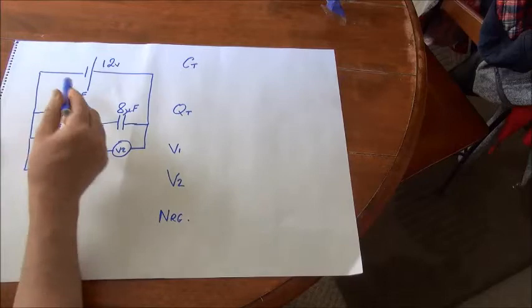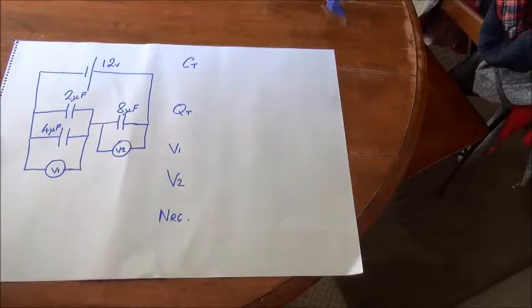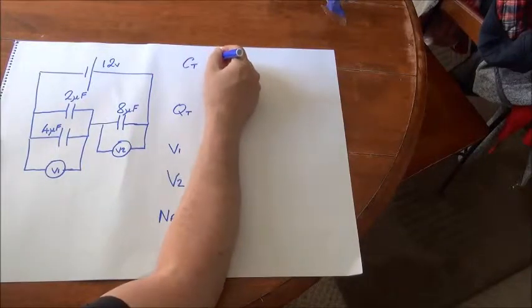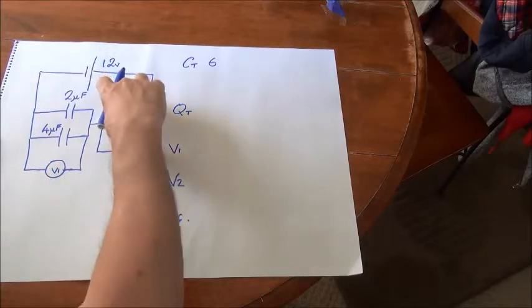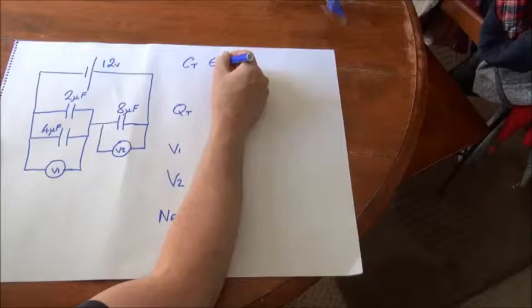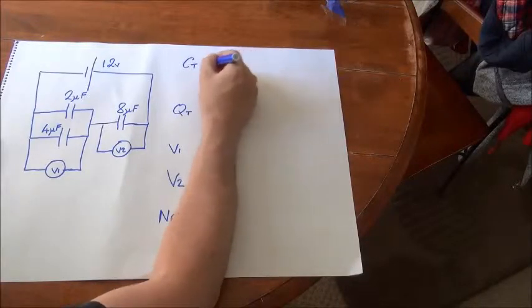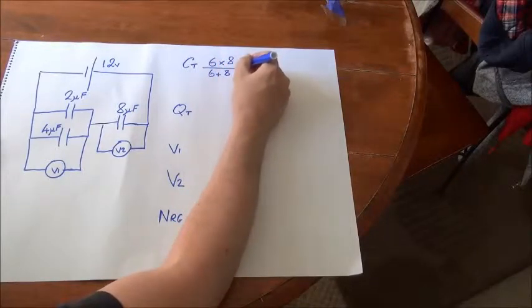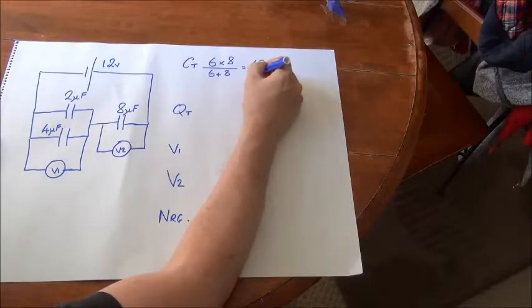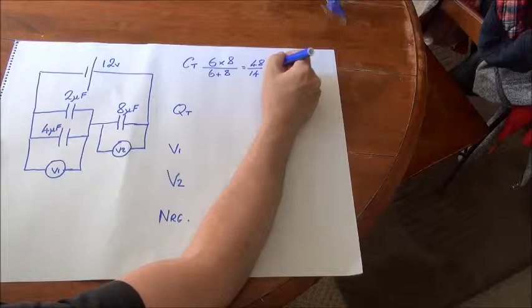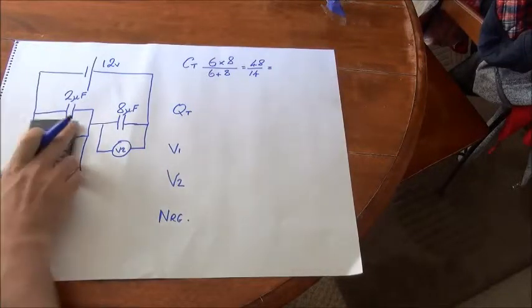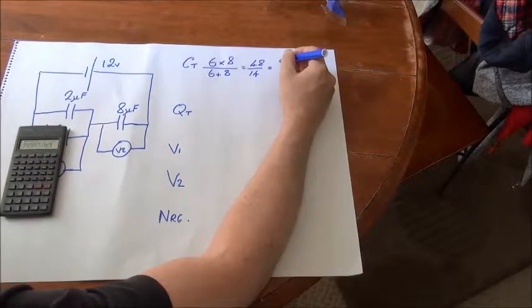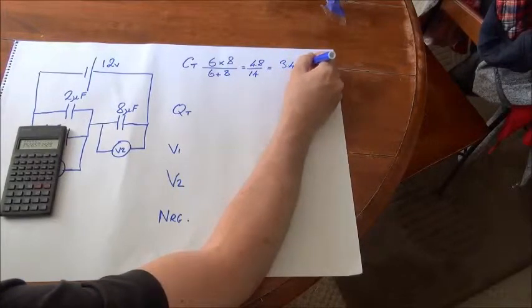We have two capacitors in parallel here, and we know that when capacitors are in parallel we add their capacitances. So 2 and 4 obviously make 6. And then we have these two which in parallel are in series with an 8 microfarad capacitor. So using product over sum, we're going to have 6 times 8 over 6 plus 8, and that will give us 48 over 14, which equals 3.42 microfarads.